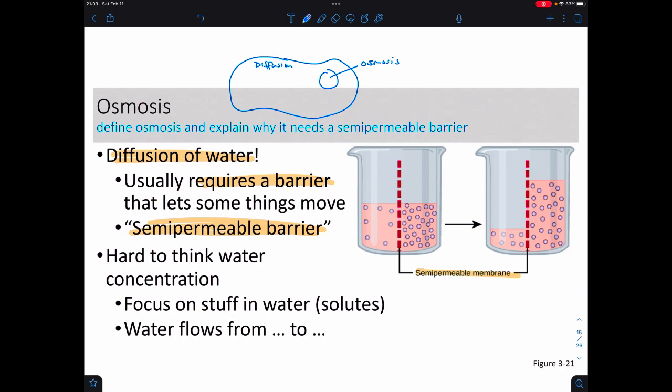So the way that we can think about this and that's what this figure is showing is water flows from low solute concentration to high solute concentration. So if I look at this figure here these little dots those are solutes. If I look here on the left there are less solutes, on the right there are more solutes. Well what does water do? Water is going to flow from less solutes to more solutes.